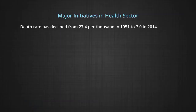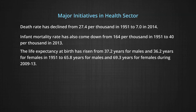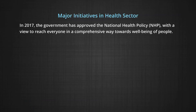There has been significant improvement in the health sector. Death rate has declined from 27.4 per thousand in 1951 to 7.0 in 2014. Infant mortality rate has come down from 164 per thousand in 1951 to 40 per thousand in 2013. Life expectancy at birth has risen from 37.2 years for males and 36.2 years for females in 1951 to 65.8 years for males and 69.3 years for females during 2009 to 2013. Still, the availability of health care facilities is inadequate and unaffordable for a large section of the population. In 2017, the government approved the National Health Policy for comprehensive well-being of people.